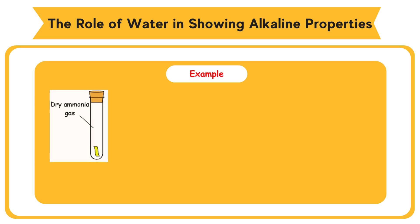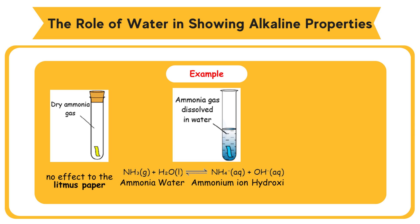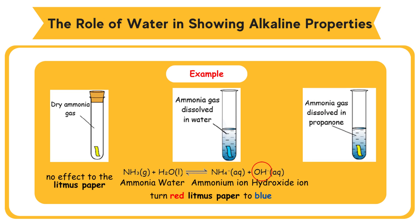Example: dry ammonia gas gives no effect to litmus paper. Ammonia dissolved in water can turn red litmus paper to blue. In water, the ammonia molecules, NH3, react with water, H2O, and ionize to produce ammonium ions, NH4+, and hydroxide ions, OH⁻. The hydroxide ions turn red litmus paper blue. Propanone is an organic solvent. Ammonia dissolved in propanone does not ionize to produce hydroxide ions, so litmus paper does not turn blue.